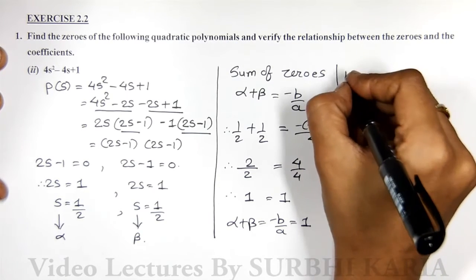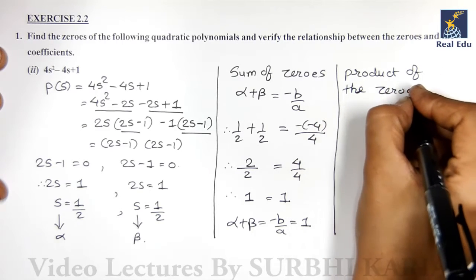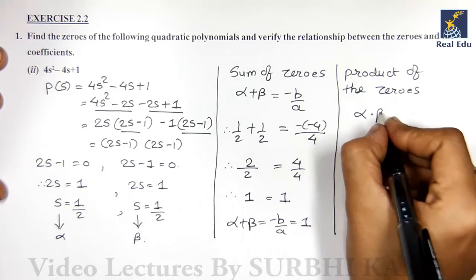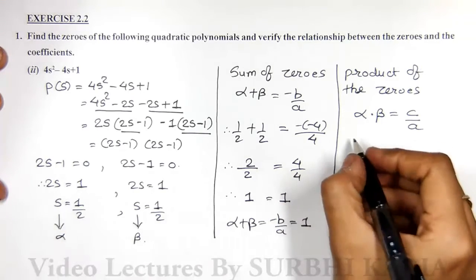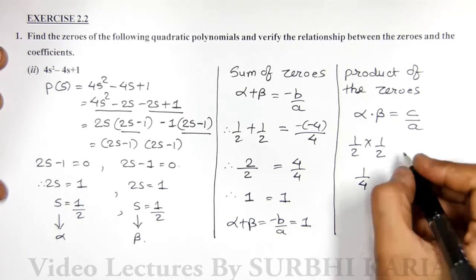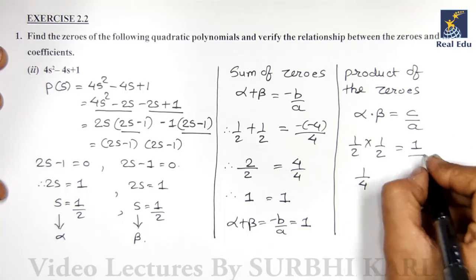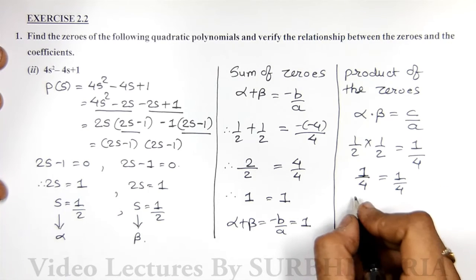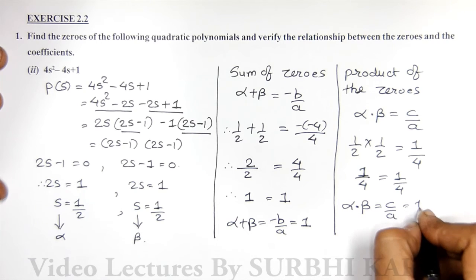Product of zeros: multiplication of α and β. The equation is c/a. α × β = 1/2 × 1/2 = 1/4. c/a: c is 1, a is 4, so 1/4. Same quantity: 1/4 = 1/4. Therefore, α·β = c/a = 1/4.